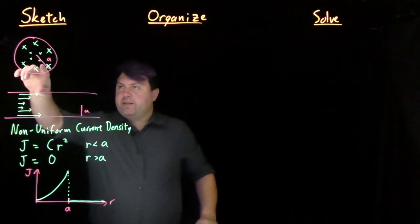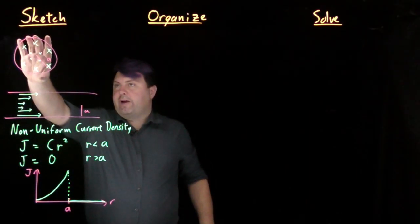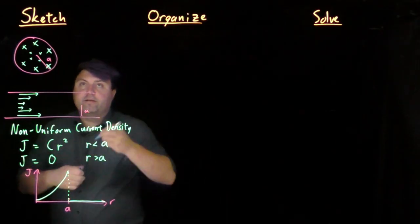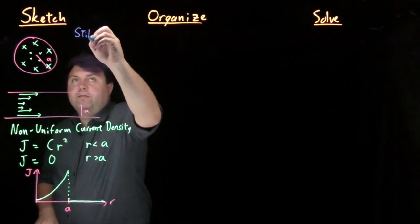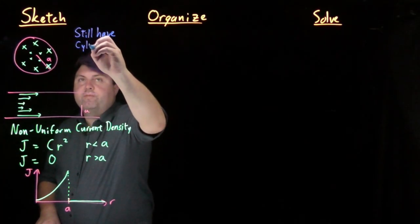What I want us to understand is this is radially symmetric, so we still have our cylindrical symmetry.